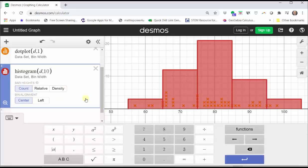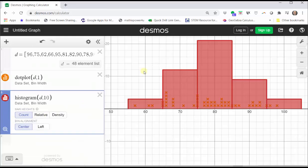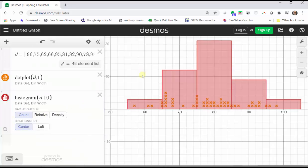Close this menu. Now under the bar height, we have the option of count, relative, or density. Let's close the Desmos keypad for a moment. Let's click, hold, and drag the graph to reposition it.